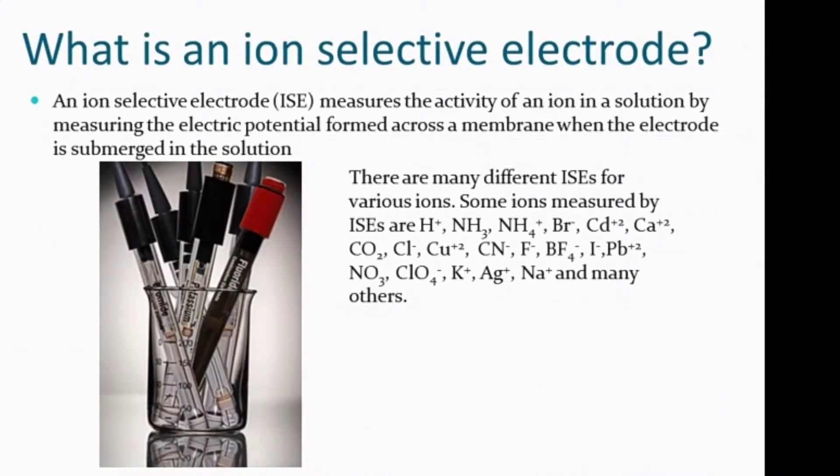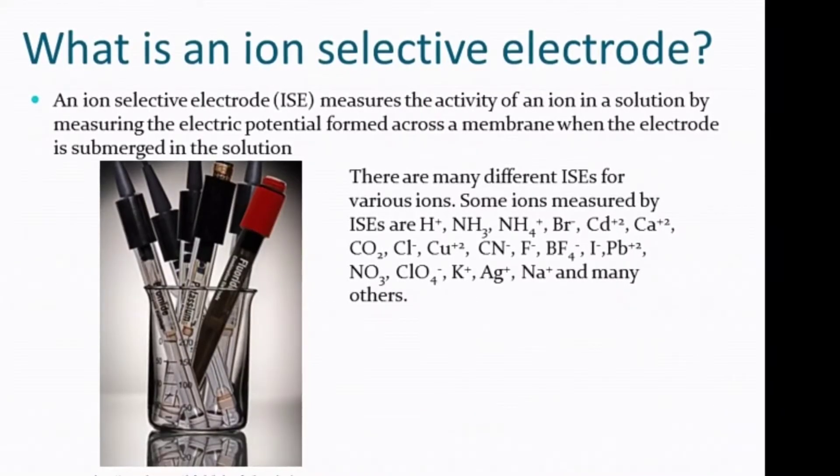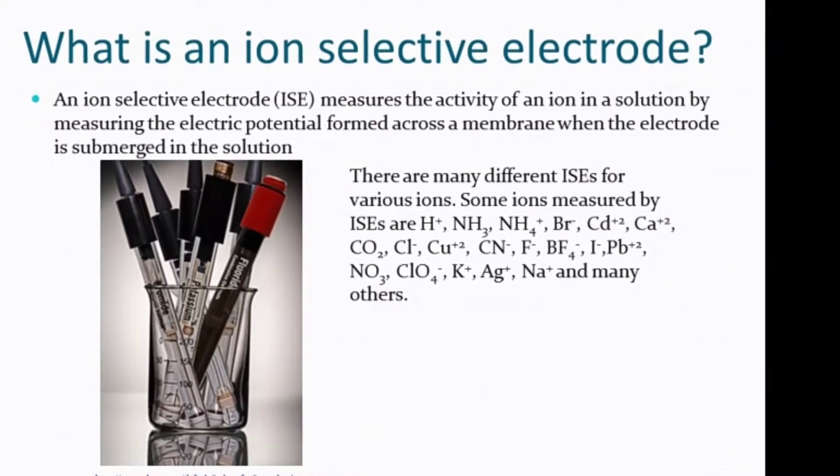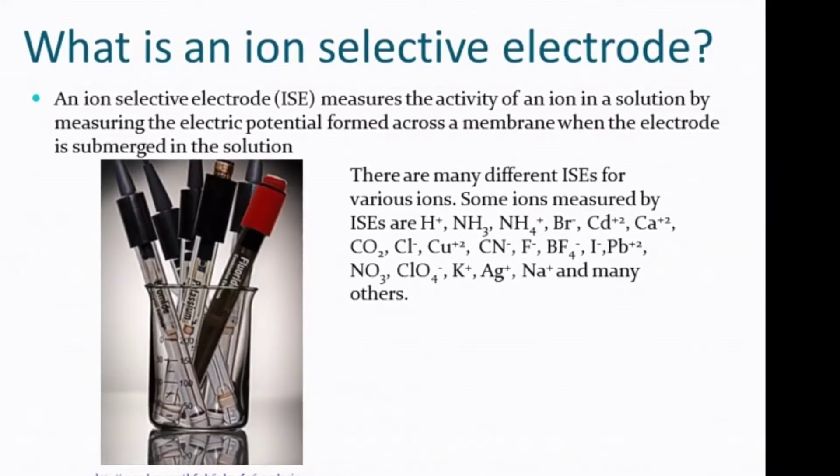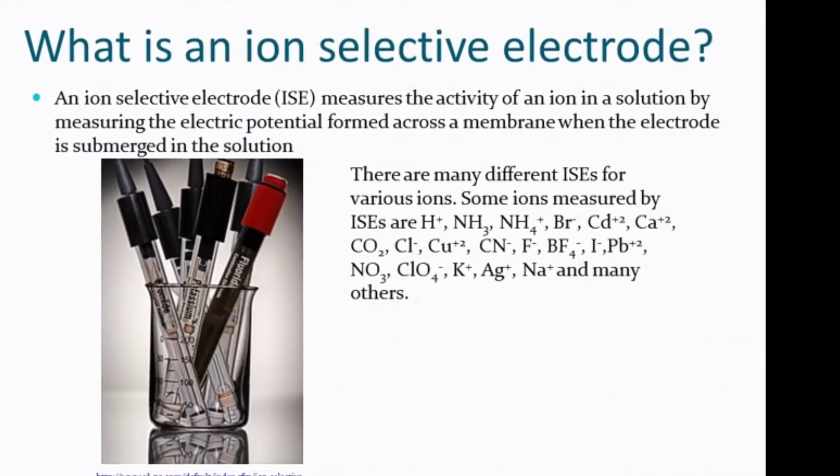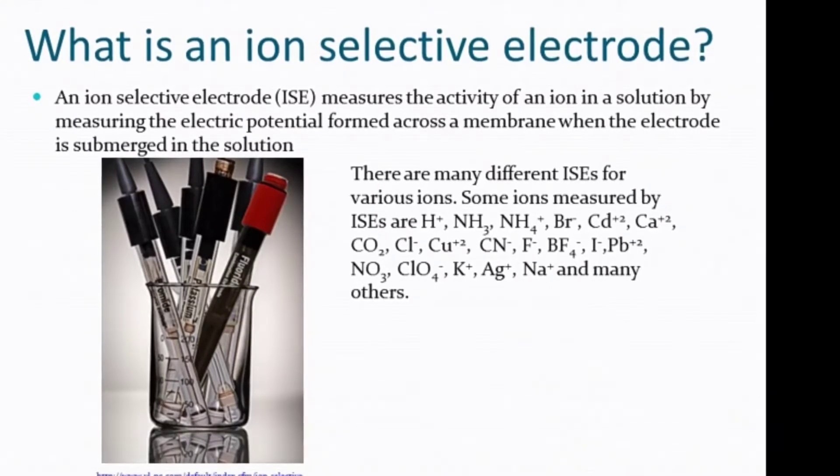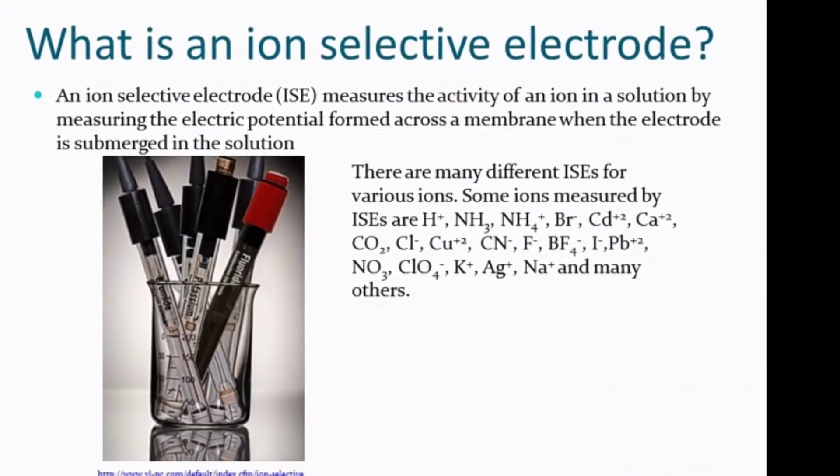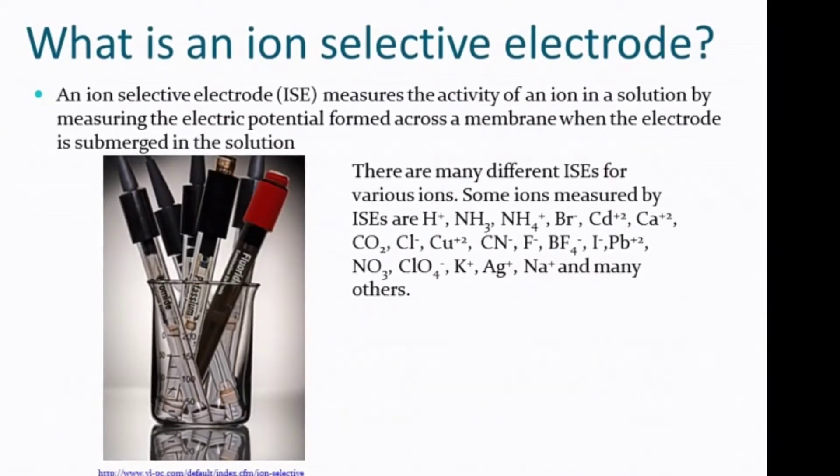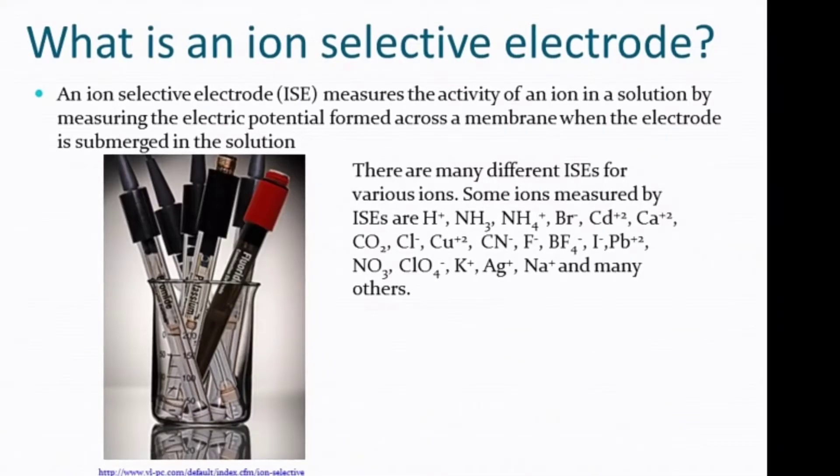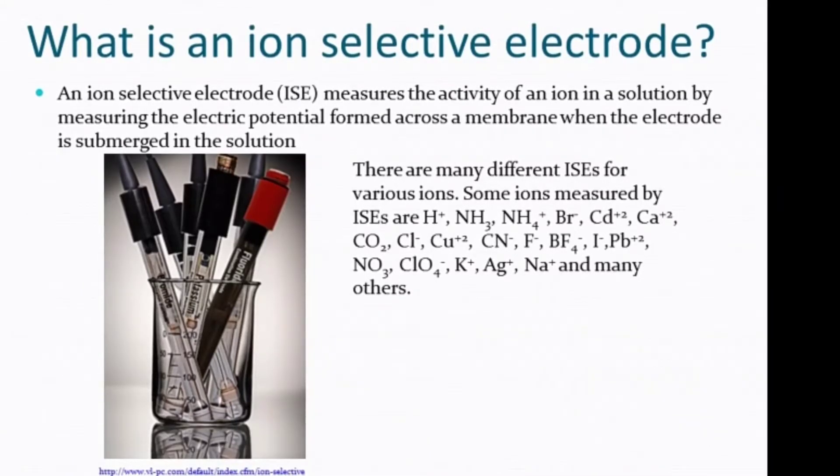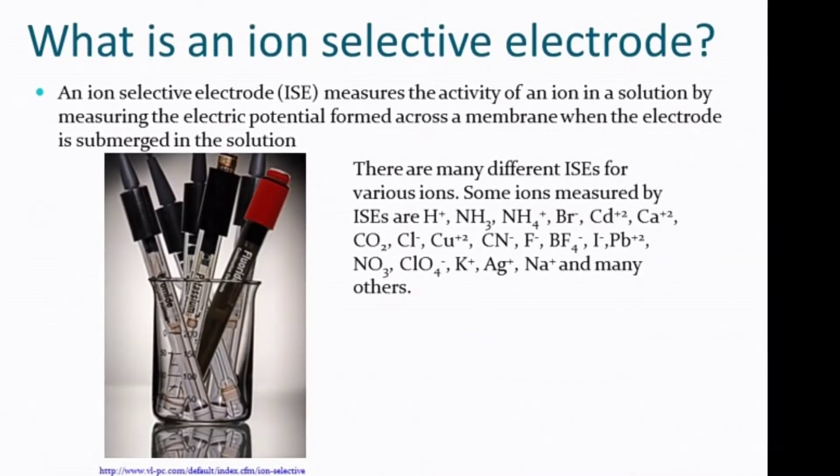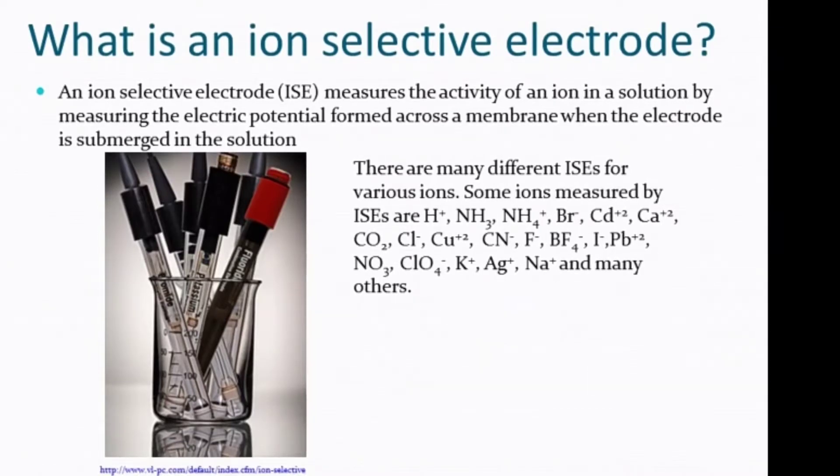Now move on to what is ion selective electrode. Ion selective electrodes measure the activity of an ion in a solution by measuring the electrical potential formed across the membrane when the electrode is submerged into the solution. There are different types of ion selective electrodes for chloride, nitrite, fluoride, potassium, sodium, carbonate, bicarbonate, and many more.